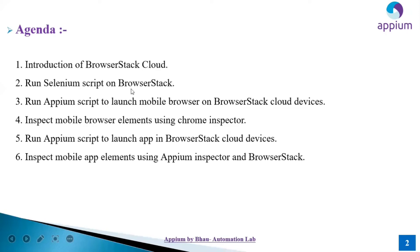First we will run scripts for desktop applications, then we'll run our Appium script to launch a mobile browser on BrowserStack Cloud devices. After that we'll learn how to inspect mobile browser elements using Chrome Inspector, and then run the Appium script to launch an app on BrowserStack Cloud devices.